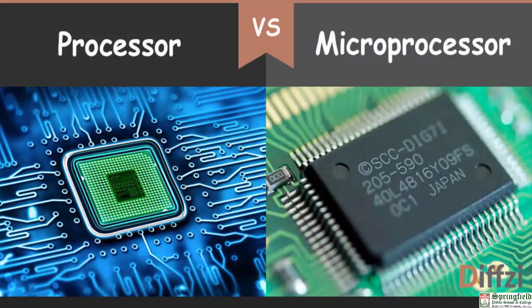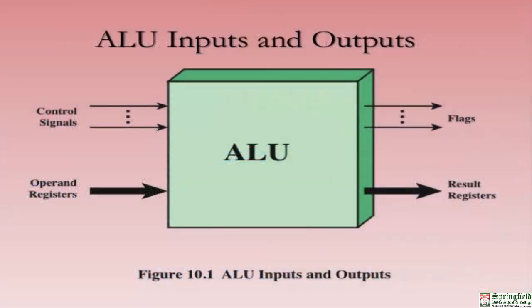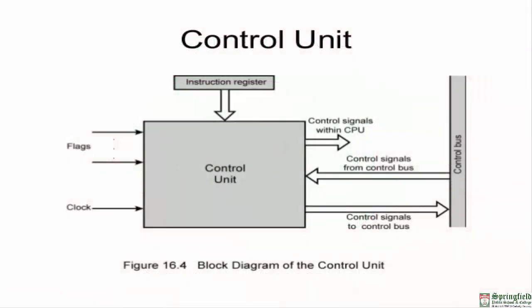The microprocessor is the main chip on the motherboard that controls all activities of the computer; it is also known as the central processing unit (CPU) or simply the processor. The ALU (Arithmetic Logic Unit) is the part of the computer that performs all calculations and comparisons. It consists of an arithmetic unit — which performs addition, subtraction, multiplication, and division — and a logic unit that performs comparisons of numbers and alphabets. The control unit controls the operation of all components of the computer.